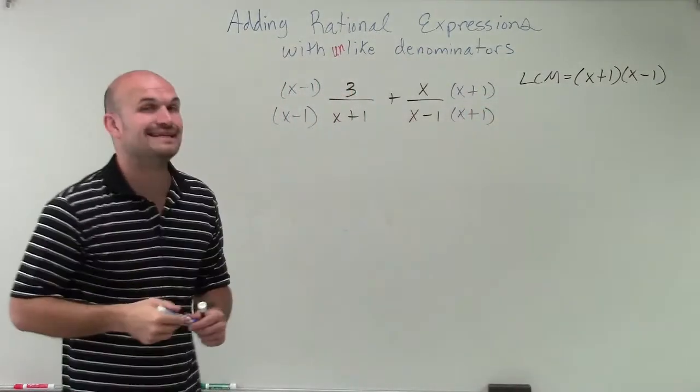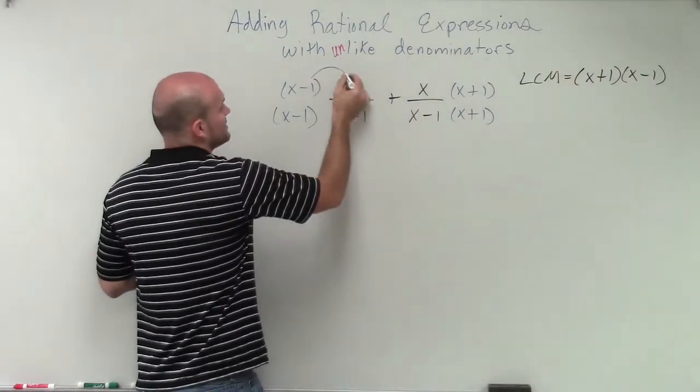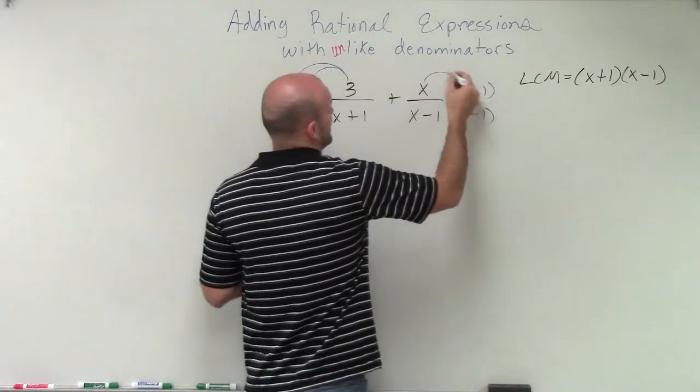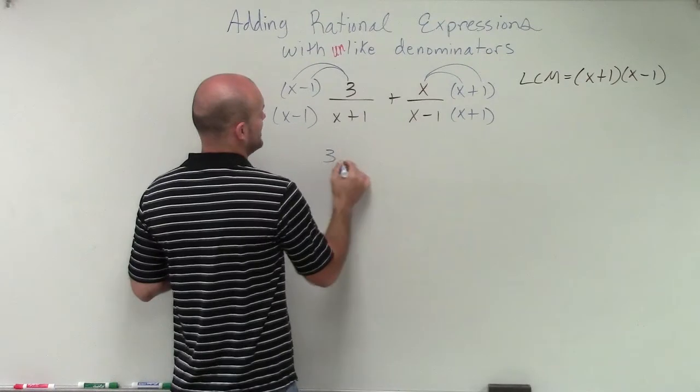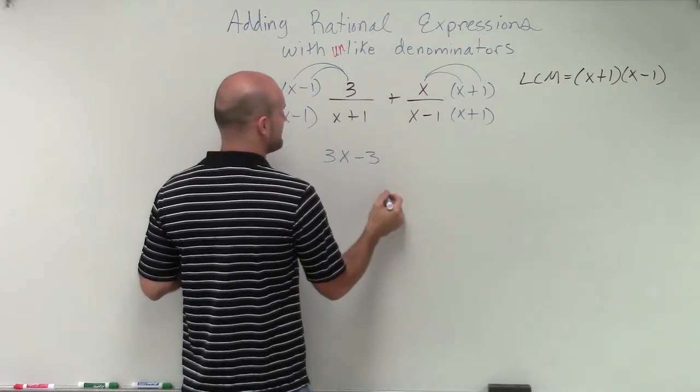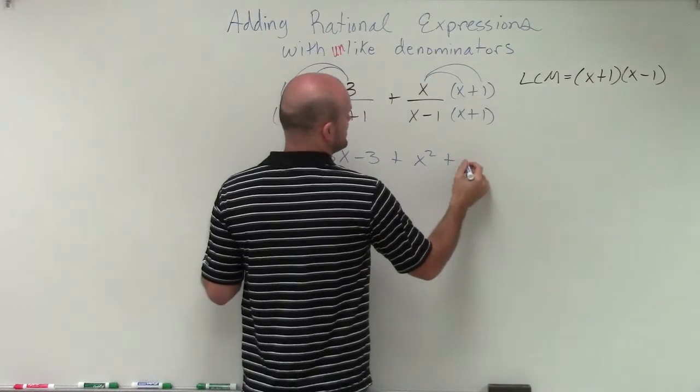All right, now we need to make sure we apply distributive property and be very careful with it. 3 times x and 3 times negative 1. x times x and x plus 1. So here I have 3x minus 3, and plus x squared plus x.